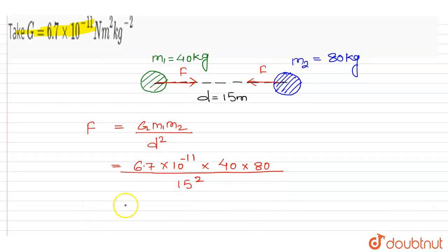So this is equal to, force of gravitation is equal to, after simplifying this, 9.5 into 10 to the power minus 10 newton.